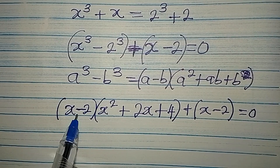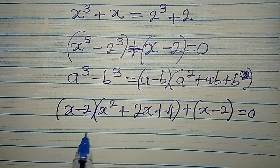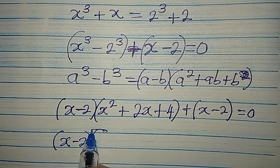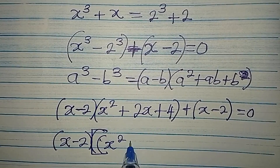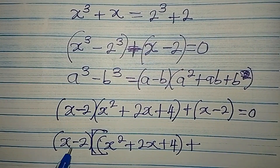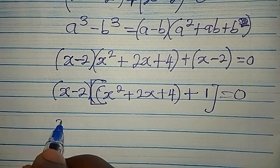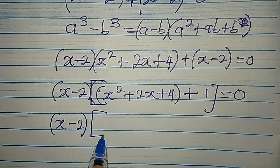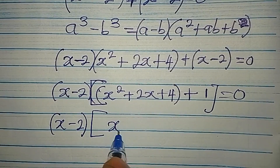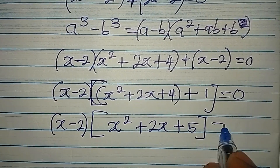Looking at this, we have (x minus 2) and another (x minus 2) — it is clearly the common factor. So we factor out (x minus 2), giving us (x minus 2) times (x squared plus 2x plus 4 plus 1) equals zero. The 4 and 1 are added, so we have (x minus 2) times (x squared plus 2x plus 5) equals zero.